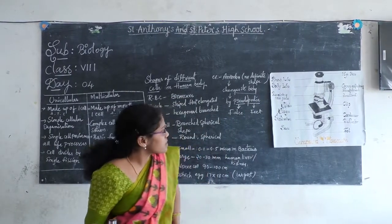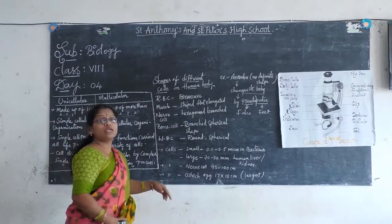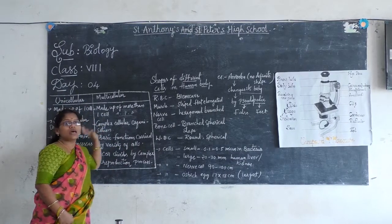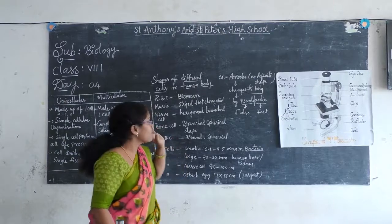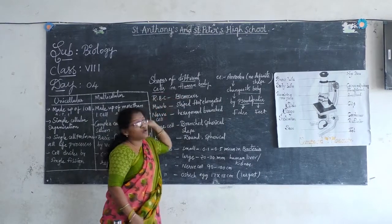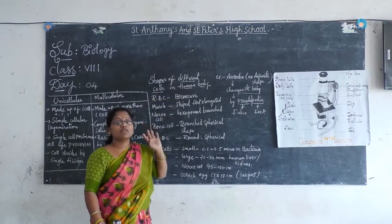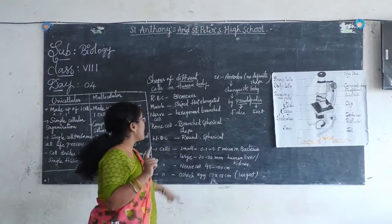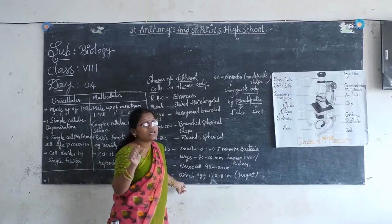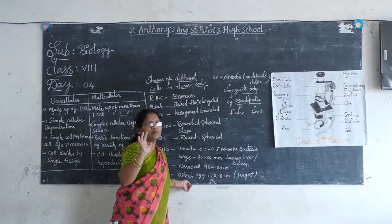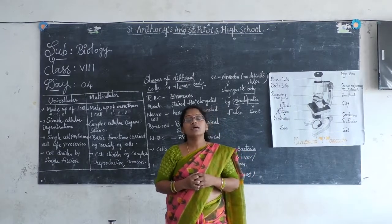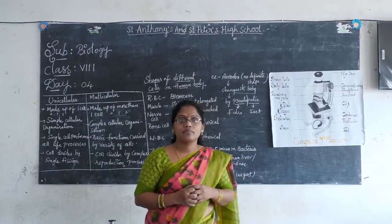What we have discussed today — I am going to ask some questions. Please note them down. First: write the differences between unicellular and multicellular organisms. Second: draw the shapes of the cells in the human body. Third: which is the smallest cell and which is the largest cell? By this I will complete this session. We will meet in the next session. Thank you children, have a great day.